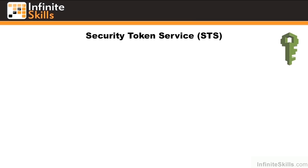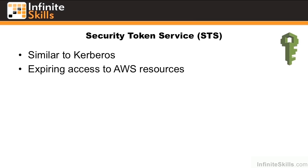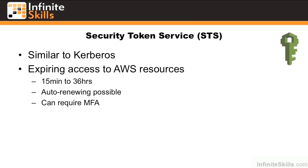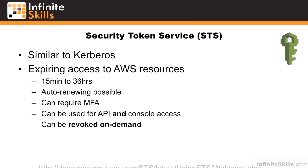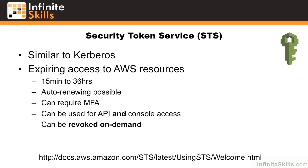Another aspect of IAM is the Security Token Service, or STS. This is similar to Kerberos in that it gives expiring access to AWS resources. The access can be from about 15 minutes to 36 hours. Auto-renewing of these keys is also possible, and it can also require MFA. This can be used for both API and console access, and it can be revoked on demand.